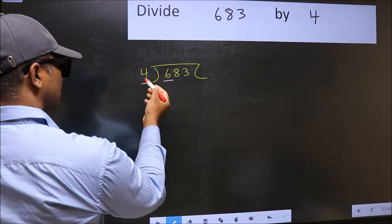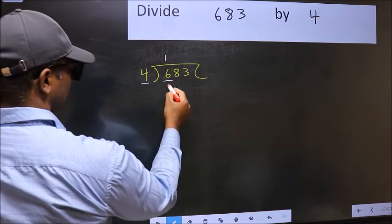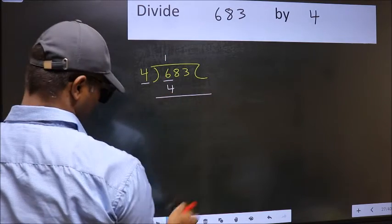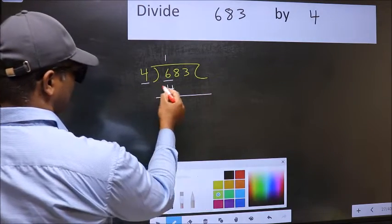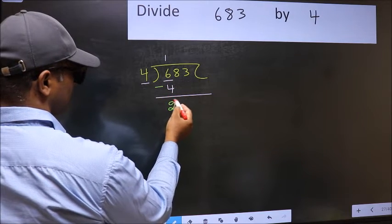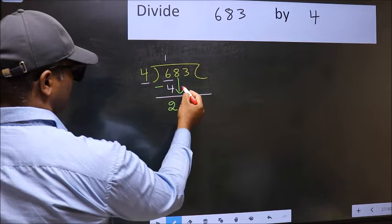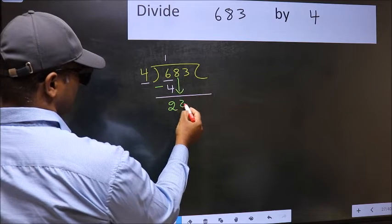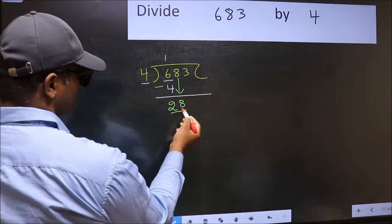A number close to 6 in the 4 table is 4 once 4. Now you should subtract: 6 minus 4 is 2. After this, bring down the next number. So 8 down. Now 28.